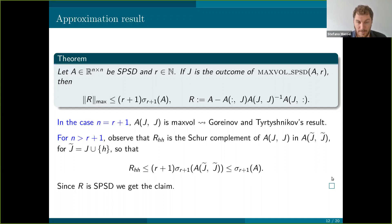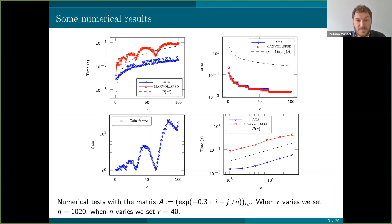Here are some experiments for checking the performances of the algorithm. We took this exponential kernel matrix. In these three experiments here, we fixed the dimension to about a thousand and we let R vary and we check that the computational time scales quadratically with R. We check the approximation error with respect to the bound provided in the previous slide. And we see that actually this bound, it seems to be off by a constant, but at least the asymptotic behavior seems to be well described. Finally, here we plot the gain factor, the ratio between the determinant of the metrics returned by Maxwell and the one returned by ACA. Finally, in this last plot, we fix the parameter R and we let N vary to check whether the cost of the two algorithms is linear.